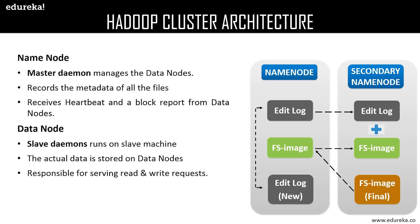The name node receives a heartbeat from all data nodes at a particular interval of time, and also receives a status update of the assigned task. If any data node fails to respond with a heartbeat, the name node considers that data node dead and reassigns the task to the next data node. Data nodes are called slaves of the name node and are responsible for storing the actual data, as well as updating the task status and health status to the name node in the form of a heartbeat.